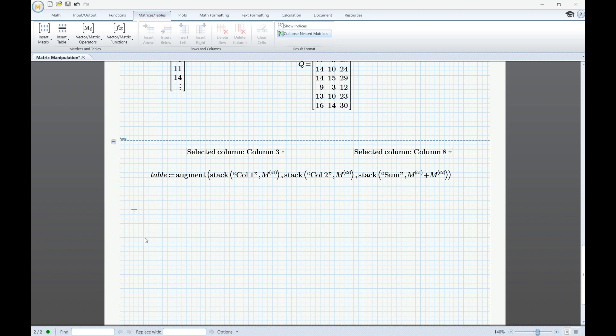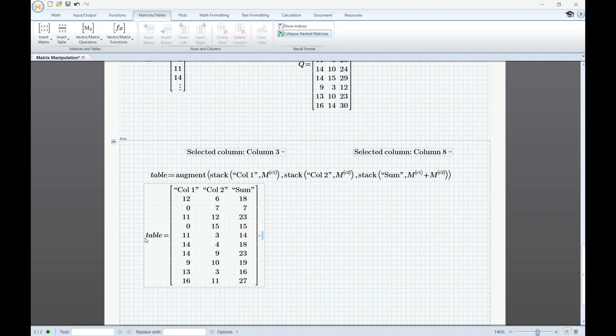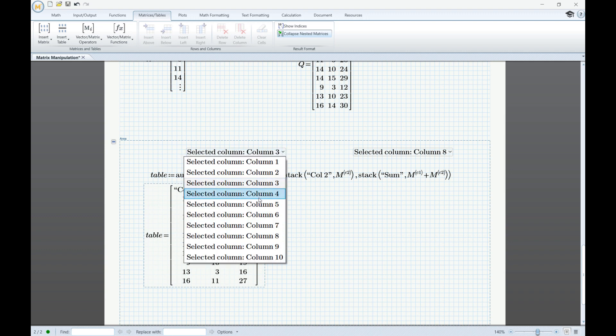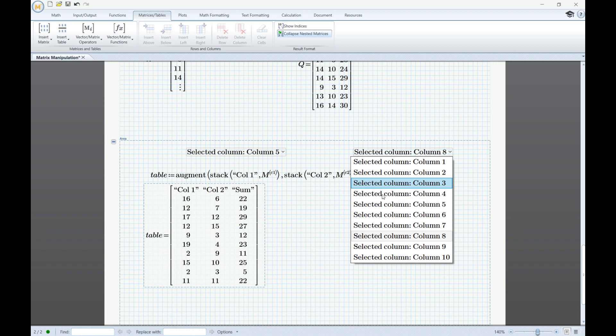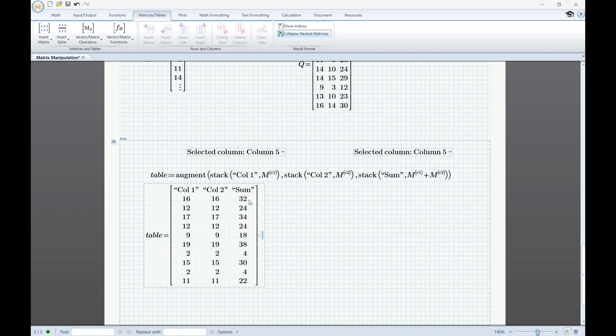So let's go ahead and evaluate the variable table. We can see the array, and changing the drop-down menus here, we vary the number of the column so we get a different result each time. This is an example of how you can leverage MathCad's function and operators to prepare your data so it can be used as input for an Excel component.